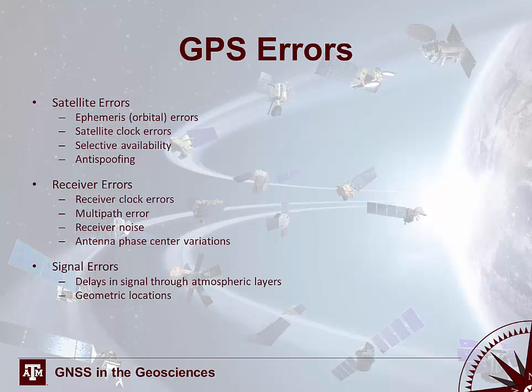The GPS errors covered in this lecture are those specific to satellites, receivers, and signals. Satellite errors include ephemeris or orbital errors, satellite clock error, and selective availability and anti-spoofing — which have been discontinued but you still need to know about them. Receiver errors include receiver clock error, multipath error, receiver noise error, and antenna phase center variations. Signal errors involve atmospheric layers that delay the signal and geometric location errors.